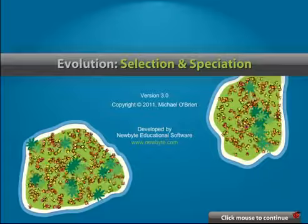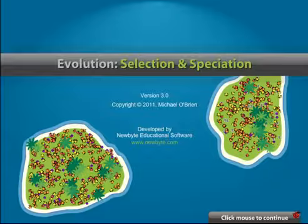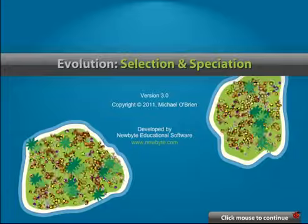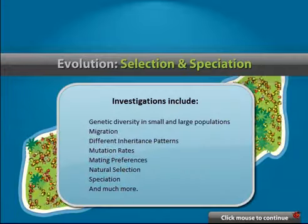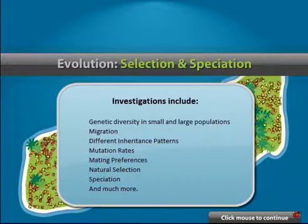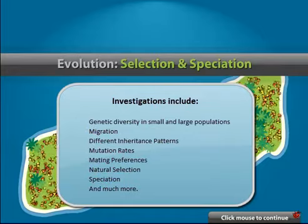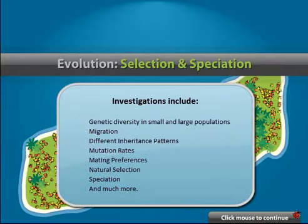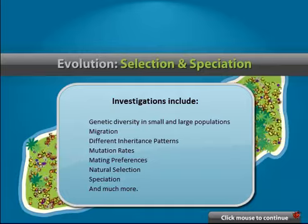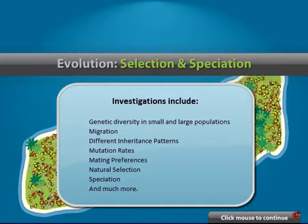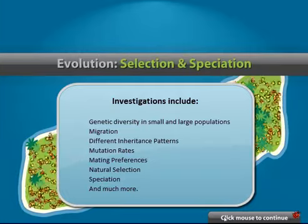Evolution 3 is a simulation enabling students to investigate many aspects of evolution in one easy to use package. Investigations include genetic diversity in small and large populations, migration, different inheritance patterns, mutations, mating preferences, natural selection, speciation and much more.